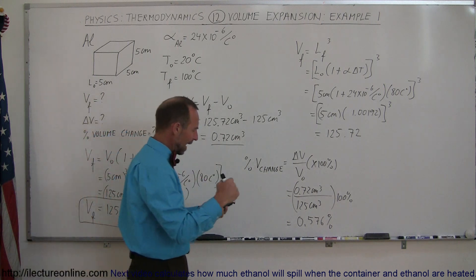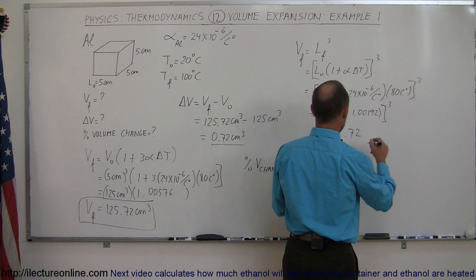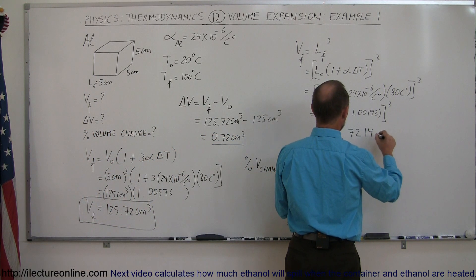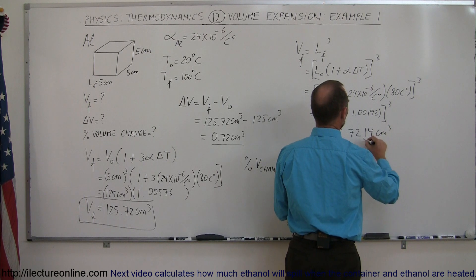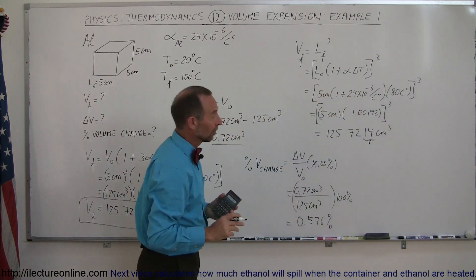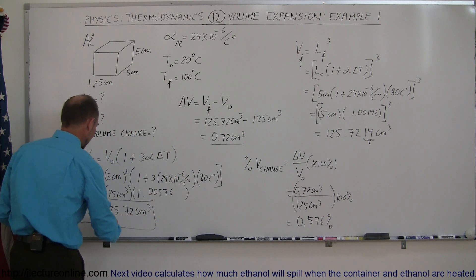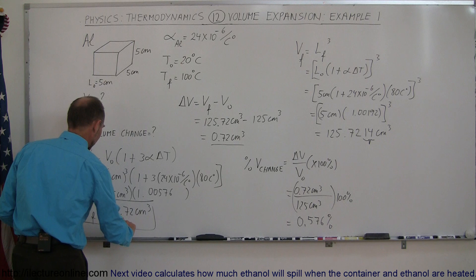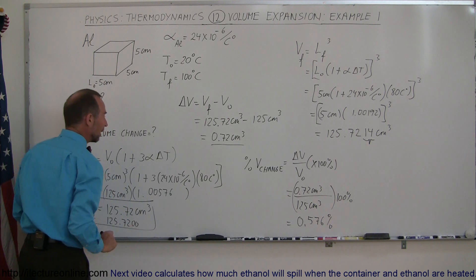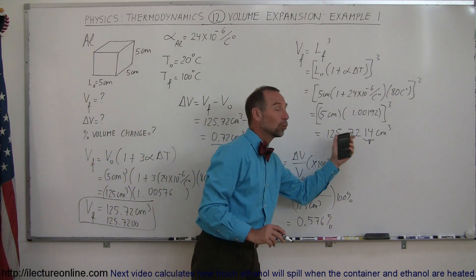If we add a couple more decimal places, we then get 1, 4 centimeters cubed, and this here is the difference that we had from our original answer, because this would have been 125.7200, now it's 125.7214.